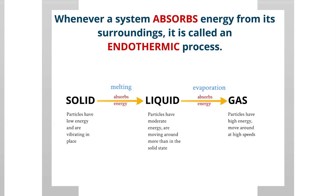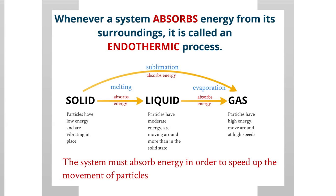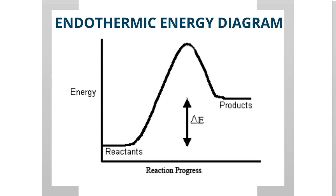Whenever we are talking about absorbing energy, we are thinking endothermic. An energy diagram shows what happens to the energy as time goes on. On the x-axis is reaction progress; on the y-axis is the energy level. Starting at low energy near the reactants — say a solid — as the reaction progresses, the energy increases over the hump and stops at a higher energy level, representing a liquid. Starting at low energy and ending at higher energy means energy was absorbed — that is an endothermic process.